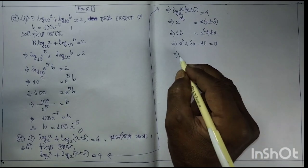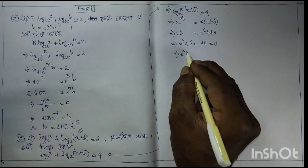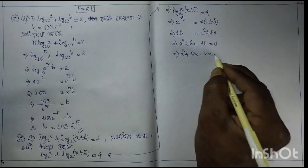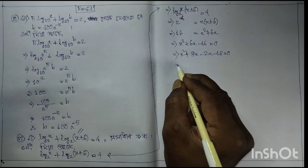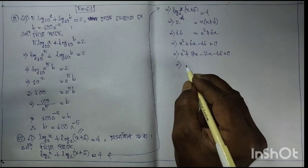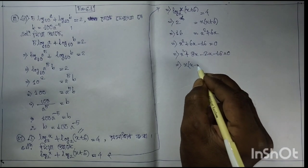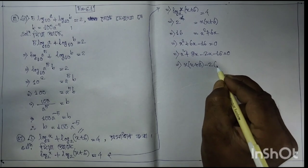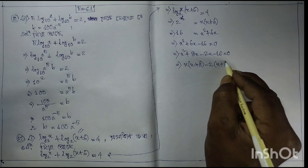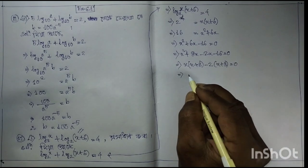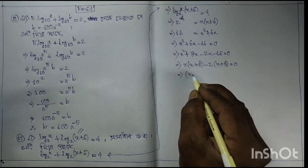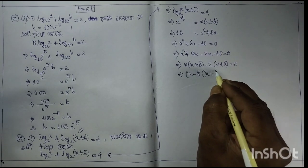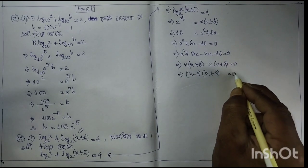x² + 6x − 16 = 0 implies x² + 8x − 2x − 16 = 0, implies x(x + 8) − 2(x + 8) = 0, implies (x − 2)(x + 8) = 0.